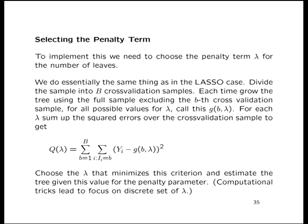Here, in the context of regression trees, we have a sample of N observations. What we do is divide those into capital B cross-validation samples. There could just be a couple — typically in this literature, for computational reasons, it's often 10, but it could be as large as N, where you split it N times into a single observation and an N-minus-1 observation. If you do it with 10 cross-validation samples, you would just divide the sample randomly into 10 subsamples.